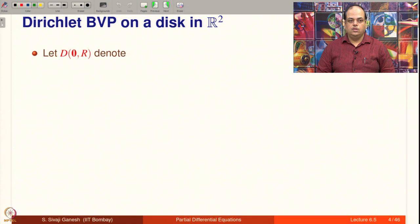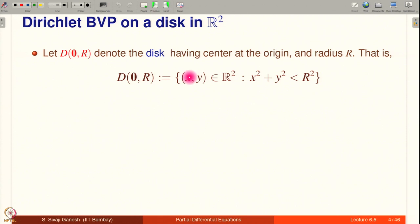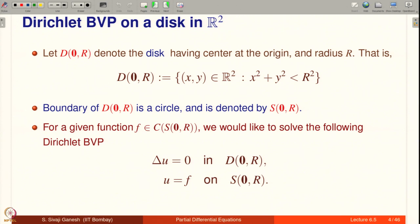Dirichlet boundary value problem on a disk in R²: let D(0, R) denote the disk with center at the origin and radius R, that is, D(0, R) is the set of all (x, y) in R² such that x² + y² < R². The boundary of D(0, R) is a circle and is denoted by S(0, R). For a given function f which is continuous on S(0, R), we would like to solve the following Dirichlet boundary value problem.